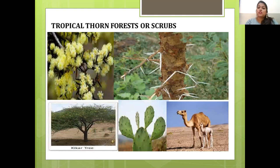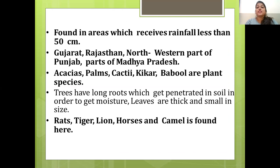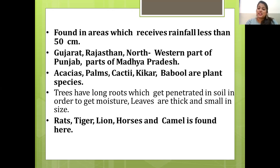The third kind is the tropical thorn forest, or scrubs. They are found in areas receiving less than 50 cm of rainfall, such as Gujarat, Rajasthan, the northwestern part of Maharashtra and parts of Madhya Pradesh. Common plants include acacias, palm, cacti and kikar. Trees have long roots that penetrate deep into the soil to get moisture, and leaves are thick and small. Common animals are rats, tiger, lions, horses and camel.